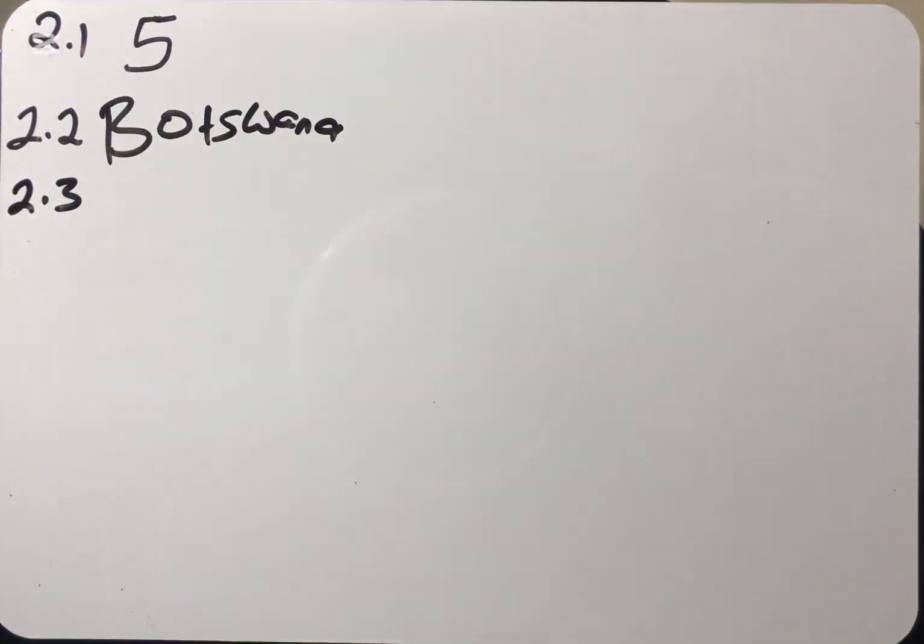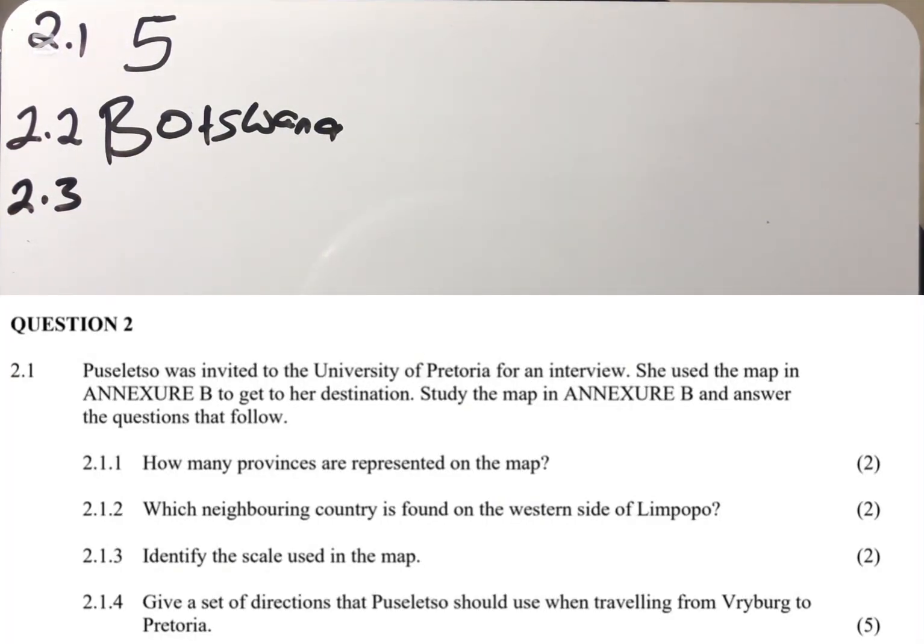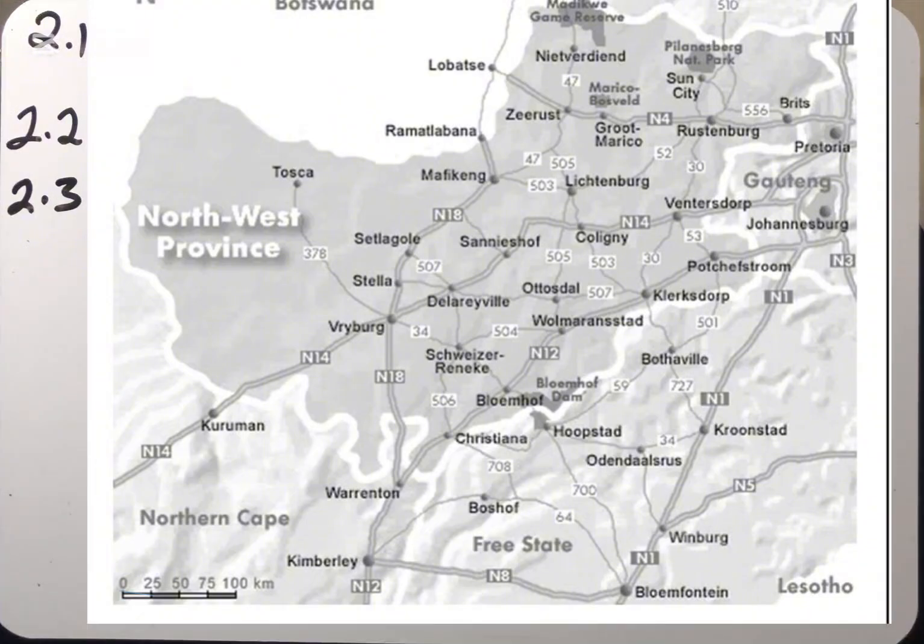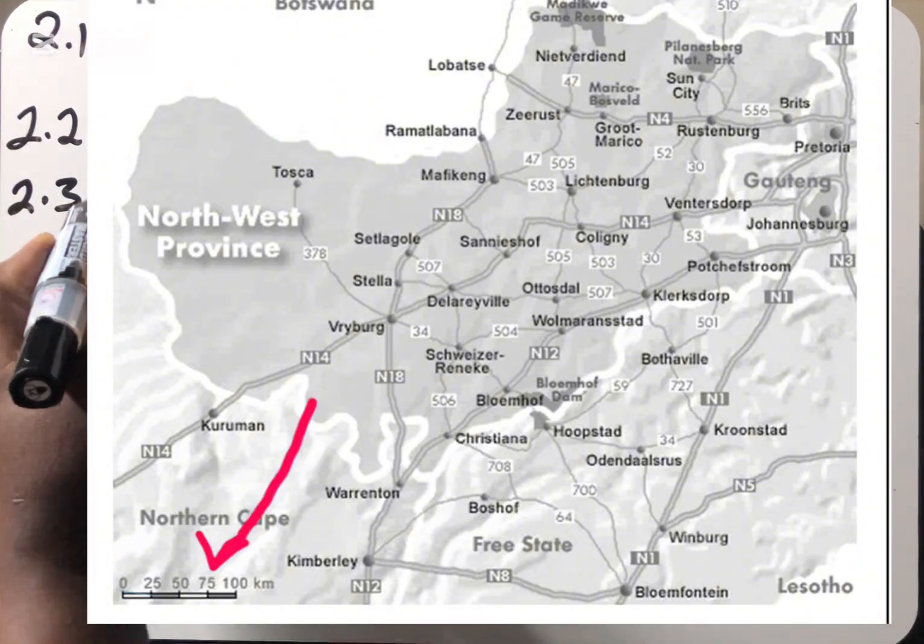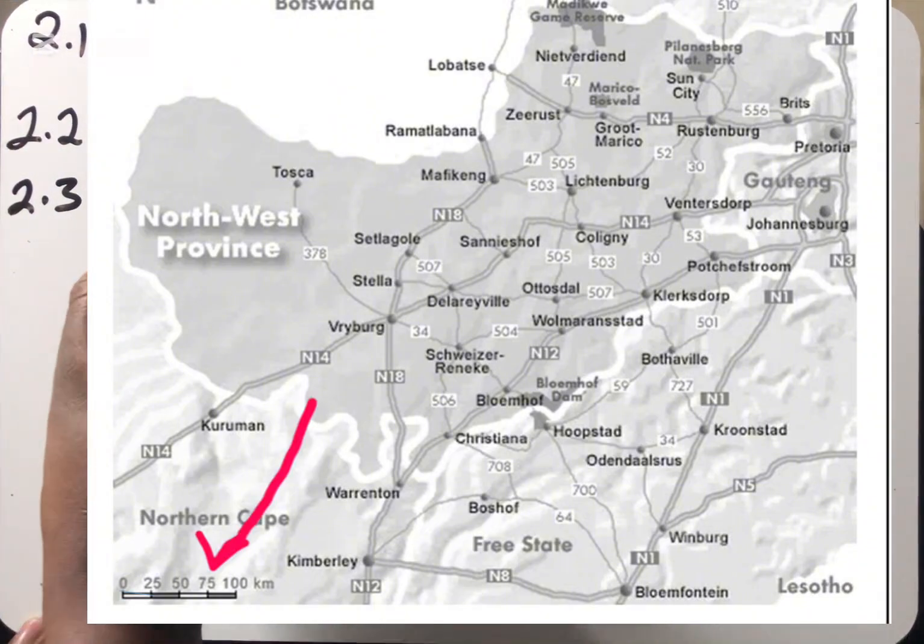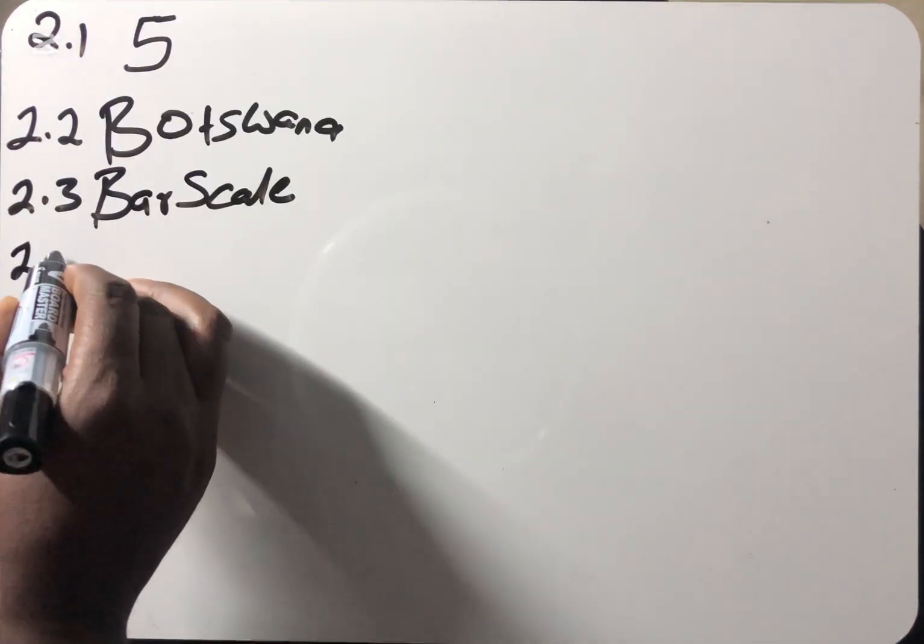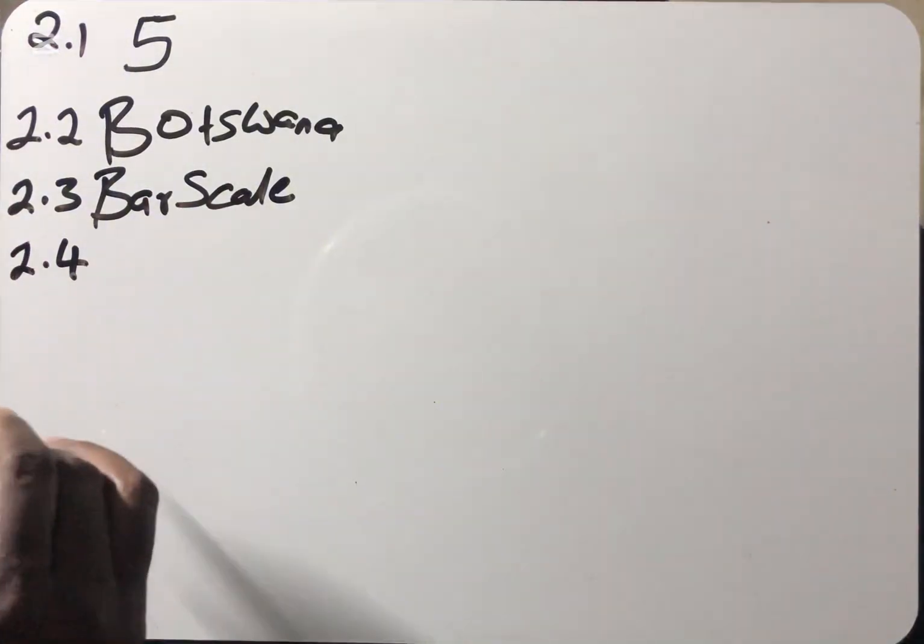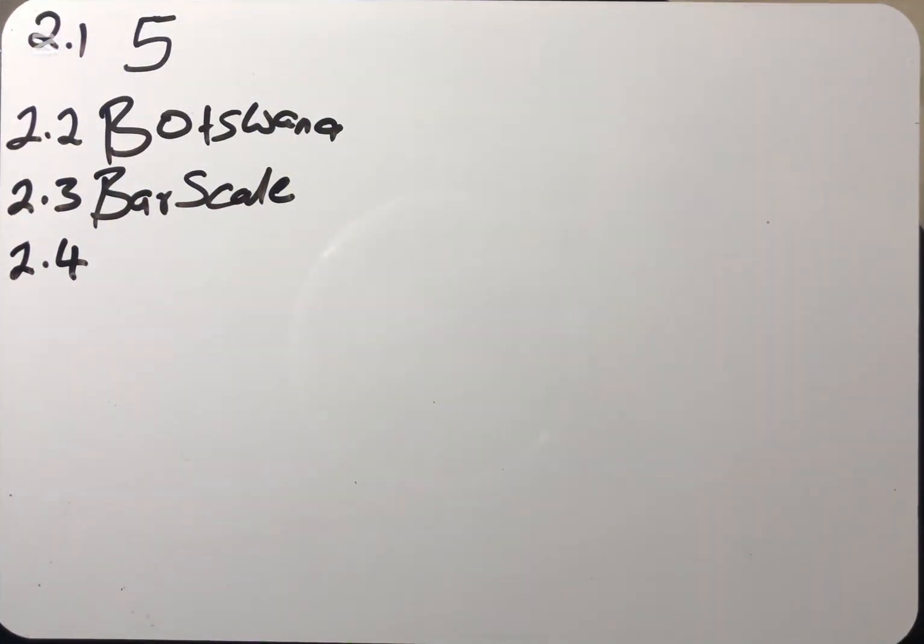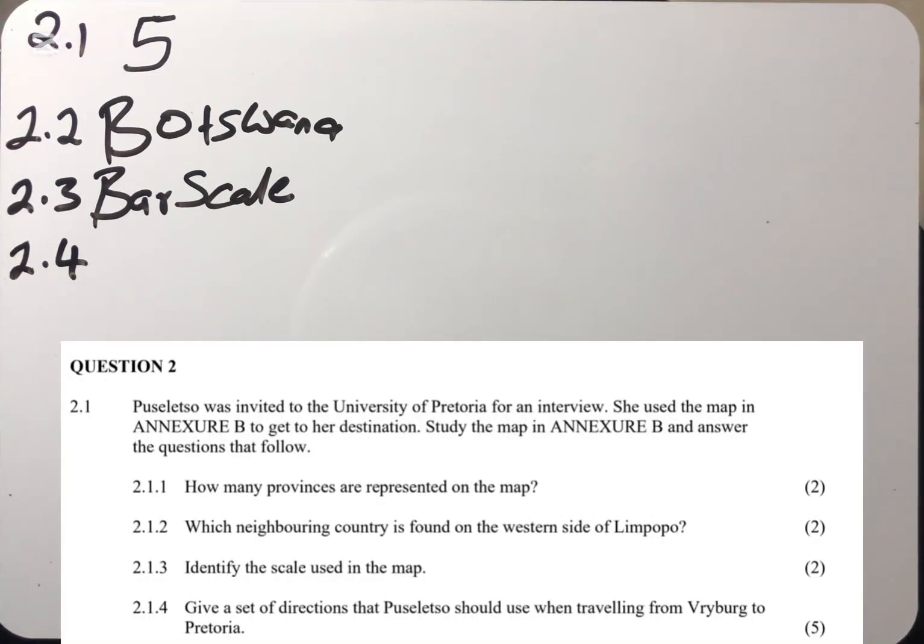If you check the western side of Limpopo, we're having Botswana. The answer for this is Botswana. Then 2.3 says: Identify the scale used on the map. If you check on the map here, the scale that we are having is a bar scale. We're having two types of scale: number scale and bar scale. In this case they've used a bar scale.